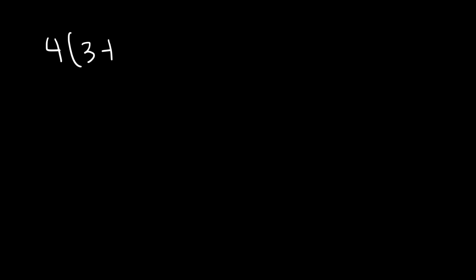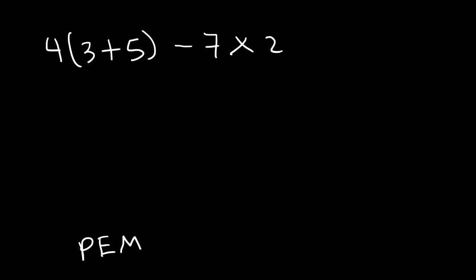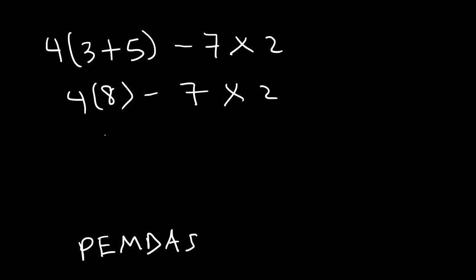What is 4 multiplied by the sum of 3 plus 5, minus the product of 7 and 2? Going back to PEMDAS, parentheses have the highest priority compared to multiplication, addition, and subtraction. So we've got to work the operation inside the parentheses first. 3 plus 5 is 8. Now we need to multiply: 4 times 8 is 32, and 7 times 2 is 14. And now we can subtract: 32 minus 14 equals 18. That's the answer for this example.